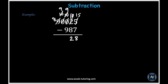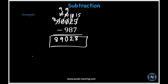And then in the hundreds place, we have 9 minus 9, and so 9 minus 9 is 0. And then we have a 9 left over in the thousands place, and an 8 in the ten-thousands place. So our final answer actually turns out to be 89,028.